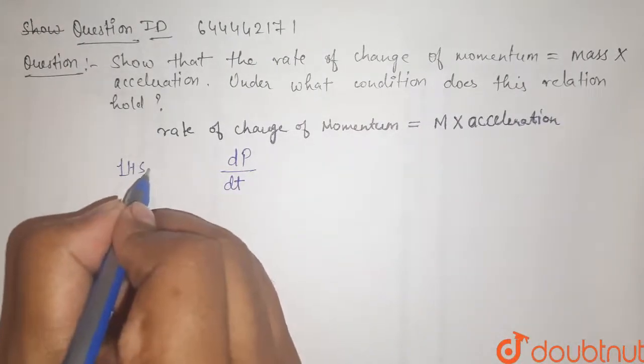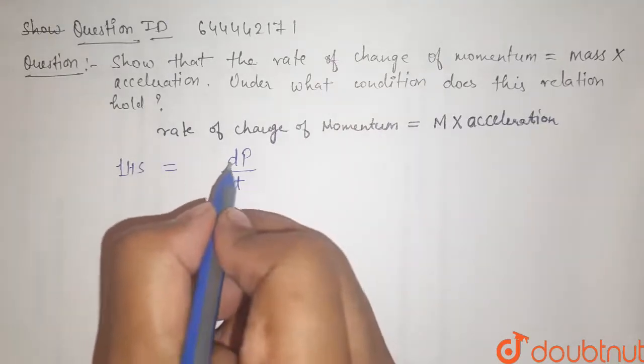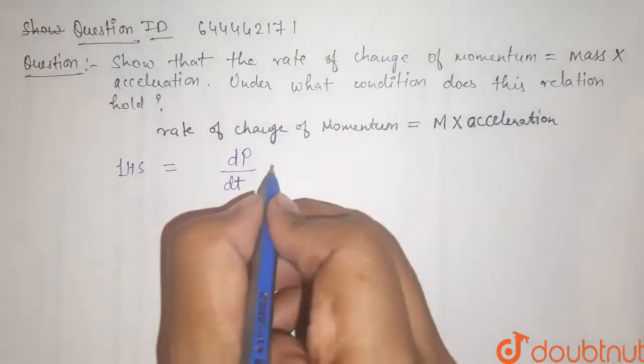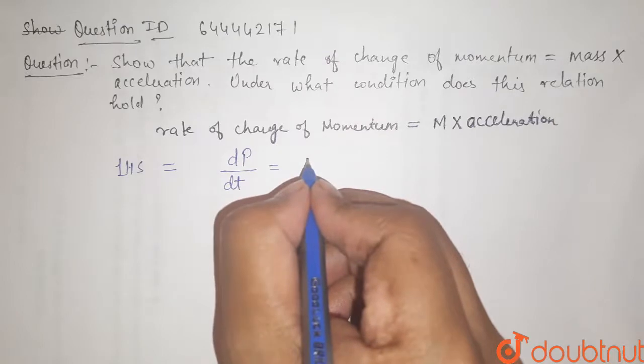So, let us take the left hand side. Left hand side equals dp by dt. So then we have the value of p.